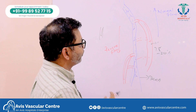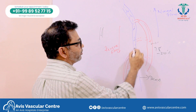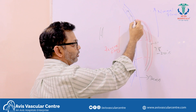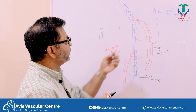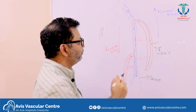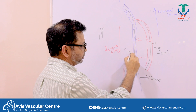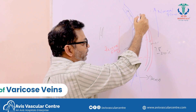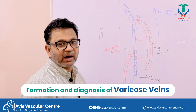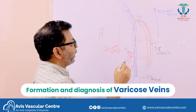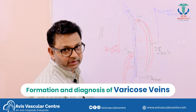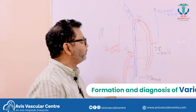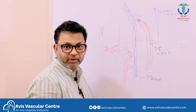In both deep and superficial veins, blood is supposed to travel upward. The superficial and deep channels meet at a junction — one main junction is up at the groin region and one is in the calf region. At this valve, sometimes because of obesity, multiple pregnancies, or genetic reasons, the valve becomes defective in some people.